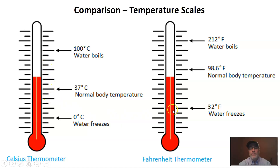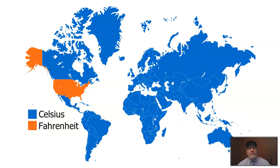A thermometer is what we use to measure temperature. Temperature is just measuring the average motion of all the particles in something. When I say Fahrenheit is only used in the U.S., I think there are 196 countries in the world right now, and the United States is the only country really still using the Fahrenheit scale.